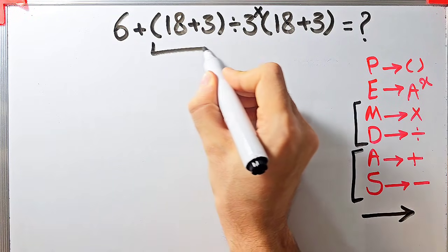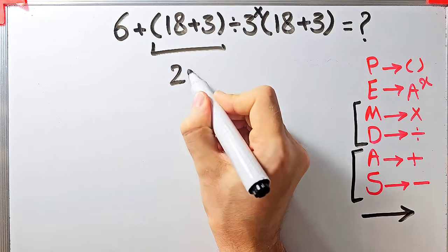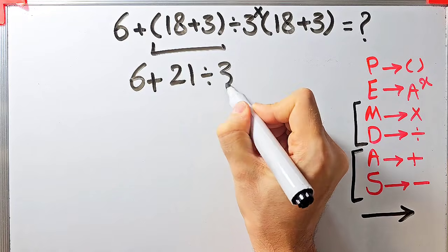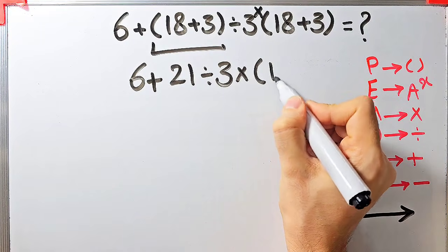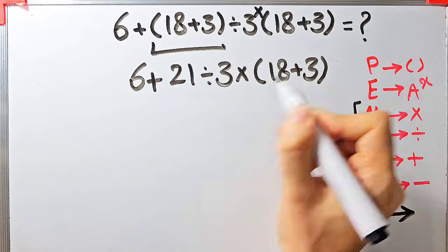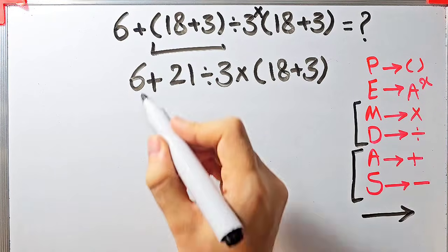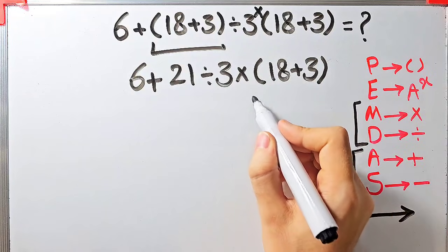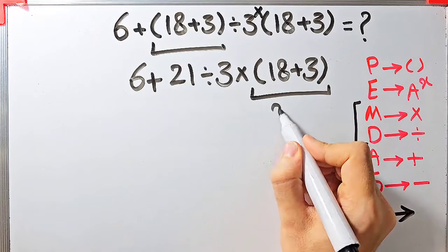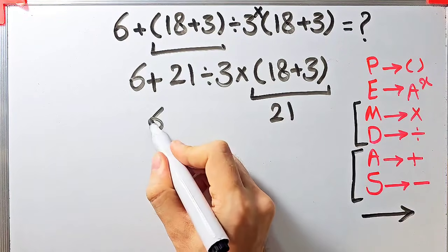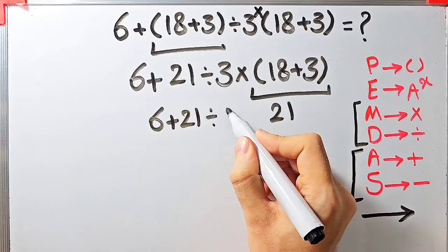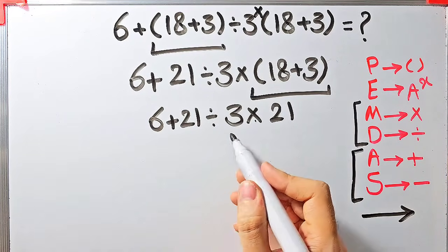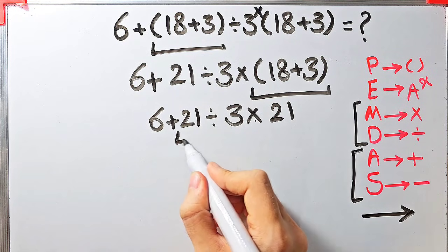According to the PEMDAS rule, first we simplify the parentheses: 18 plus 3 equals 21. Now we have 6 plus 21 divided by 3, then times open parentheses 18 plus 3 close parentheses. We simplify those parentheses again: 18 plus 3 equals 21. Now the question is 6 plus 21 divided by 3, then times 21. We have addition, division, and multiplication — first we simplify the division.